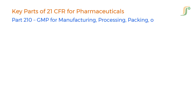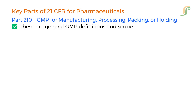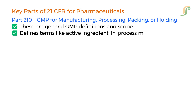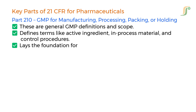Part 210 covers GMP for manufacturing, processing, packing, or holding. These are general GMP definitions and scope. It defines terms like active ingredient, in-process material, and control procedures, and lays the foundation for all pharmaceutical GMP regulations.